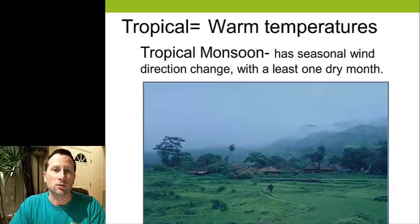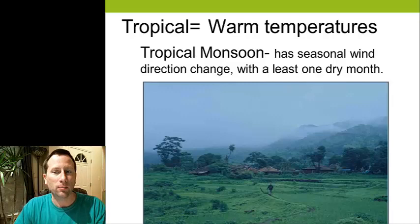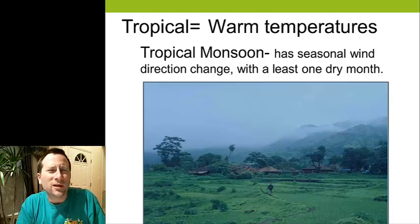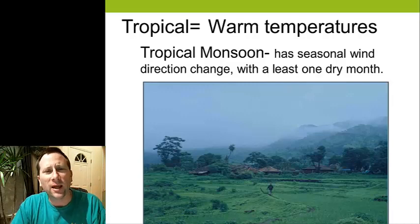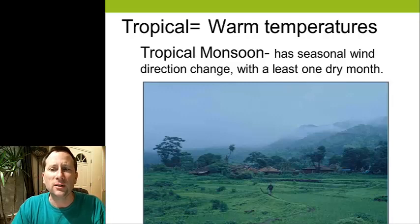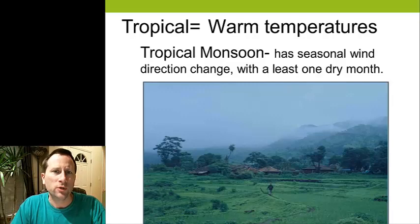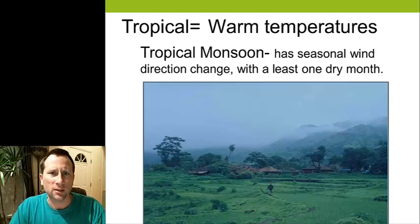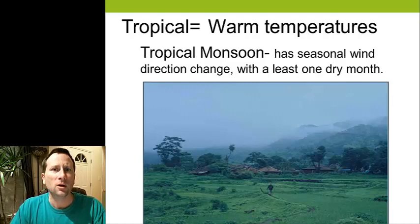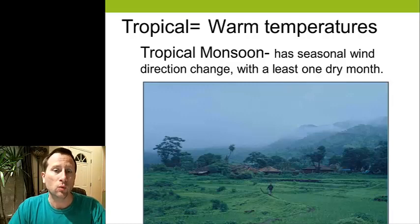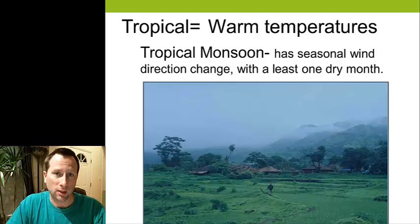Our next tropical climate is the tropical monsoon climate. Pretty close to a tropical rainforest, but they have at least one dry month a year, and that's the result of a seasonal wind change. When you think of tropical monsoon, lots of people think of India, Bangladesh — that type of area of the world where they have a very wet monsoon. There are also drier areas that get a monsoon, but wouldn't be considered tropical monsoon climate.